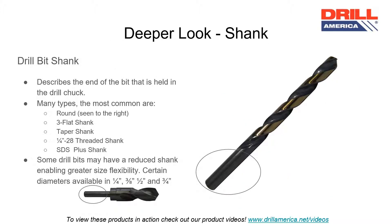The shank is located on the non-cutting end of the drill bit and is the part of the drill bit that is held in the machine. There are many types of drill bit shanks. The most common are round, also called straight shank, 3-flat, taper shank, threaded shank, and SDS Plus. Some drill bits may have a reduced shank enabling greater size flexibility.